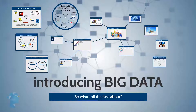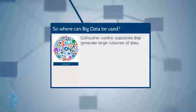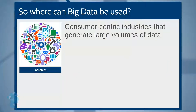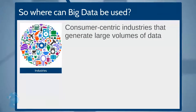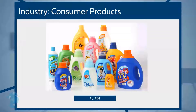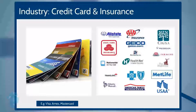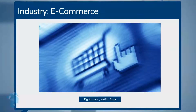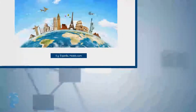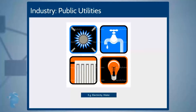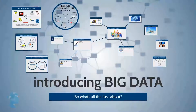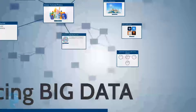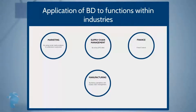The ability to harness such data for better decision making is critical in today's world. Big data is most prevalent in consumer-centric industries that typically generate large volumes of data — think industries like consumer products such as Procter & Gamble, credit card and insurance companies, e-commerce companies like Amazon, Netflix and Flipkart, travel and leisure, and public utilities such as electricity and water.